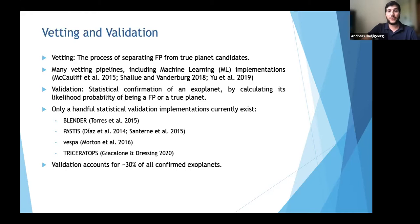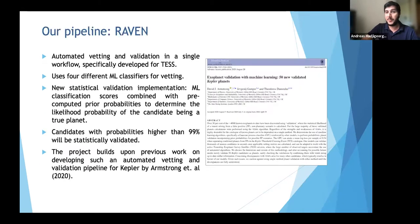Validation refers to the statistical confirmation of an exoplanet by calculating the probability of a candidate being a false positive or true planet. Only a handful of validation implementations exist, including BLENDER, PASTIS, and VESPA developed for Kepler, and TRICERATOPS, the only pipeline developed exclusively for TESS. Validation accounts for about 30% of all confirmed exoplanets to date, with the majority validated using VESPA. Our pipeline introduces automated vetting and validation in a single workflow specifically developed for TESS, using four different machine learning classifiers.